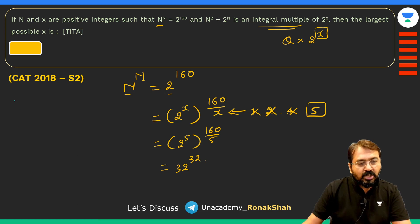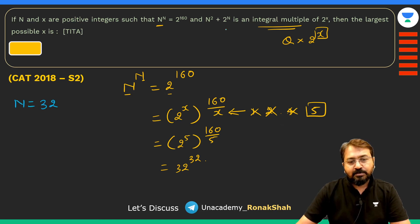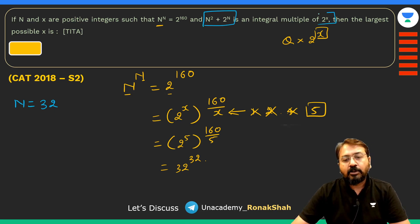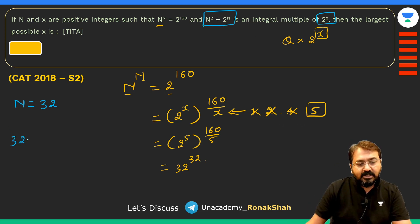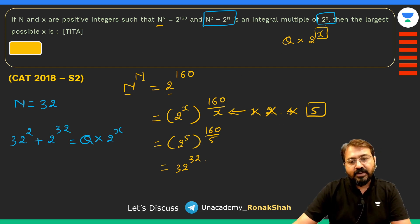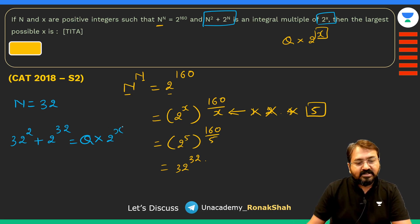Let's look at the next part of the question. Now we are told that N² + 2^N is an integral multiple of 2^X. So can I say N² means 32² + 2^N, that is 2^32, is an integral multiple—say it is Q times 2^X where Q is an integer. We are asked to find out the maximum possible value of X.